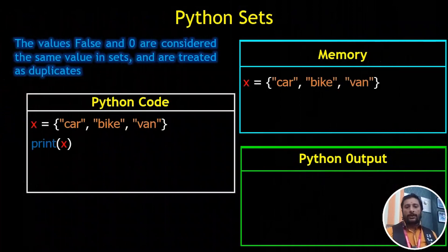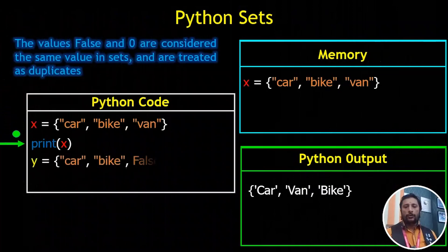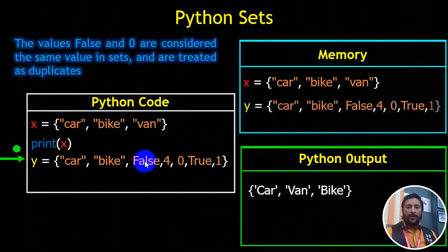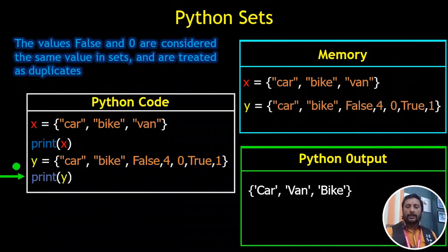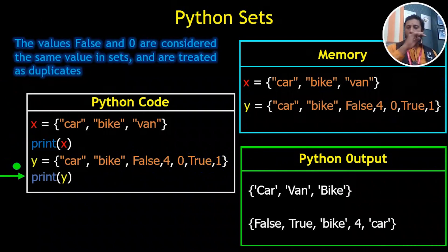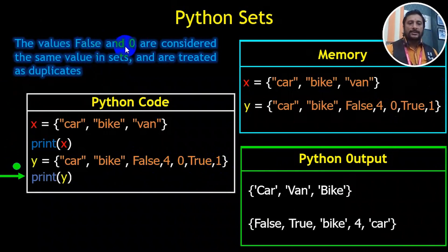Now you can print it and try it. Note: if you have Car, Bike, and then False, True, True, True — the duplicates are removed automatically. You can see the values 0 and 1. The value of False and 0 is considered the same value in sets and is treated as a duplicate.